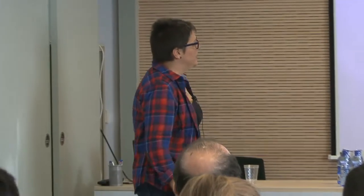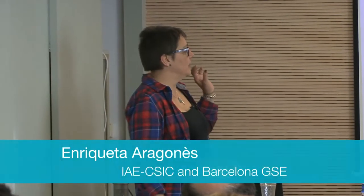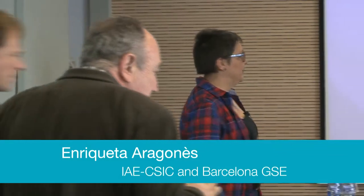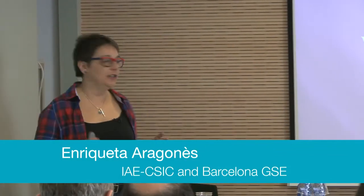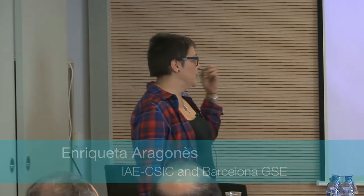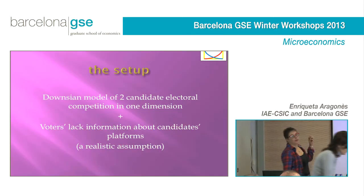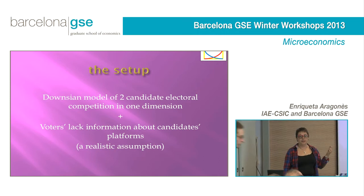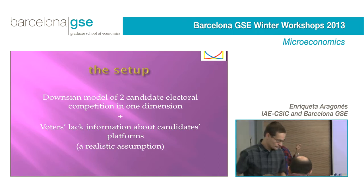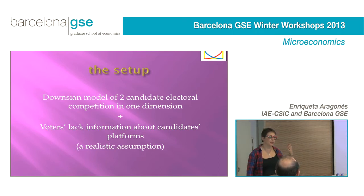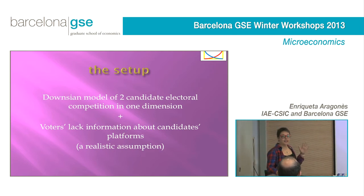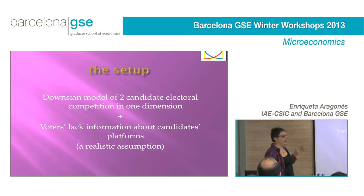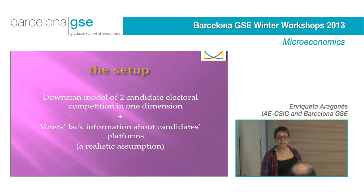The basic setup analyzed in this paper is a standard Downsian model of two-party electoral competition in one dimension — a standard Hotelling model with a small twist. What we add, or the assumption that we change, is the information that the voters have about the candidates. Instead of assuming perfect information, we assume that voters don't see exactly the platforms presented by the candidates, and we think this is a realistic assumption.